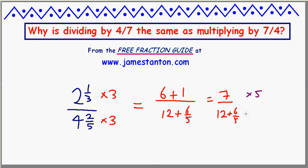Again, by choosing a clever choice of factor for the numerator and the denominator. Let's multiply each by five this time. So, seven divided by twelve plus six-fifths is really the same as thirty-five divided by twelve times five is sixty, plus six-fifths times five is six. So, two and one-third pies shared amongst four and two-fifths of a boy is the same as sharing thirty-five pies amongst sixty-six boys. Beautiful, not too hard.